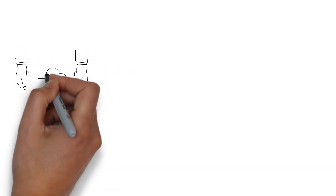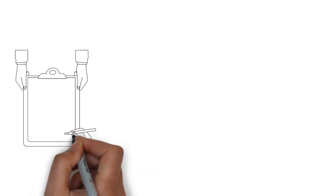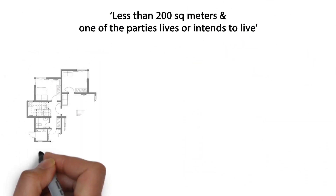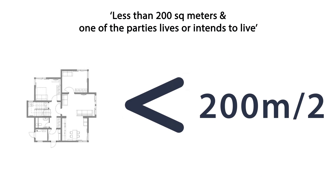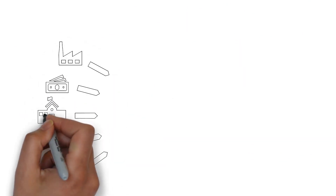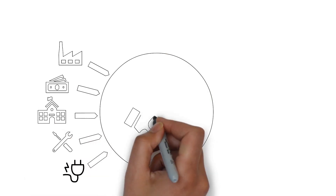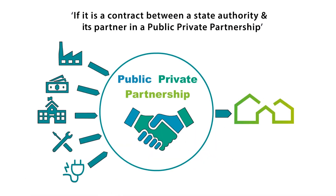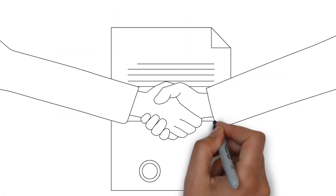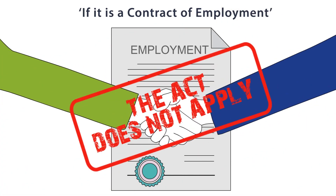But there are times when the Act does not apply. For instance, when the value of the contract is less than €10,000; when it is for a dwelling with a floor area less than 200 square metres where one of the parties lives or intends to live; when it is a contract between a State authority and its partner in a public-private partnership; and finally, when it is for a contract of employment.